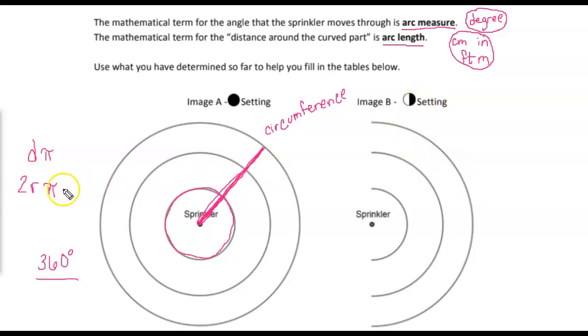So again, we're going to notice that all of the circles have a measure of 180 degrees because to go halfway around the circle is 180 degrees.